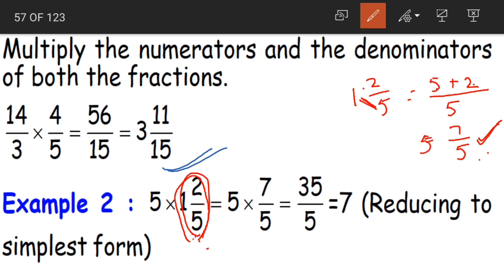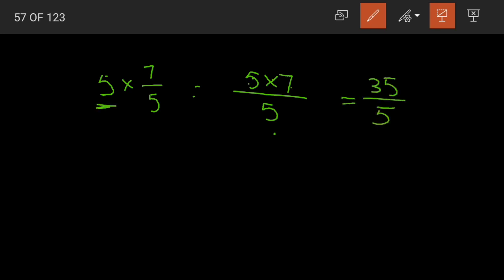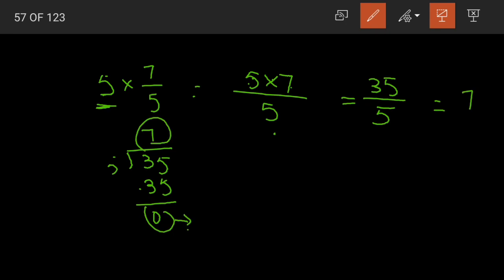Now we multiply 7/5 with the whole number 5: 5 into 7/5. As we discussed with multiplication of whole numbers, we multiply the whole number by the numerator and retain the denominator. 5×7 is 35, divided by 5. Dividing 35 by 5 gives 7. So 5 into 7/5 equals 7.